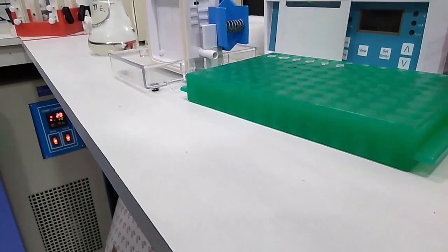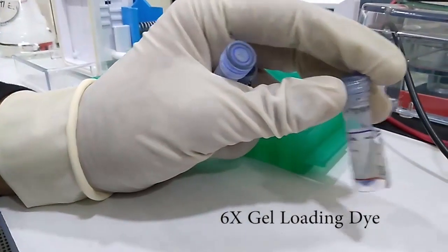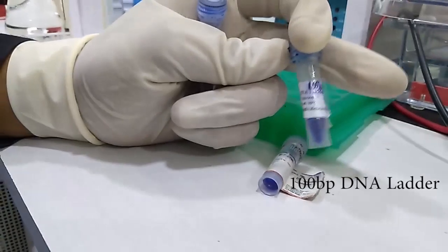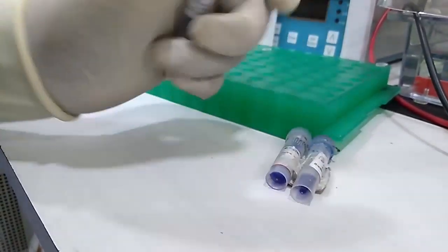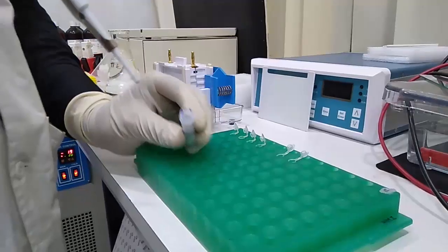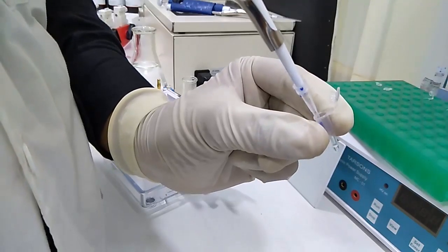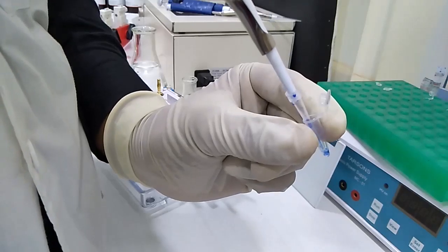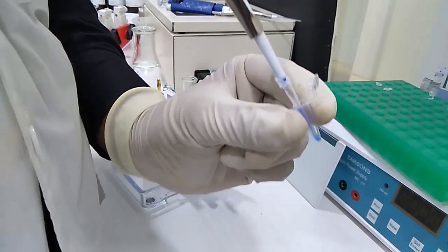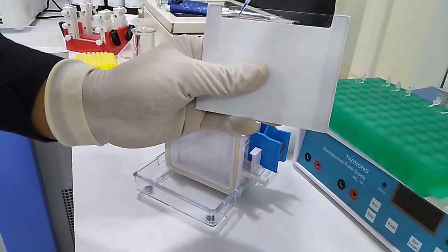For loading the sample we need this 6x gel loading dye. We need 100bp ladder and another is 1kb ladder. Now I will mix the 6x gel loading dye. We are mixing it in that manner. Now I will load the sample in that manner to the polyacrylamide gel.